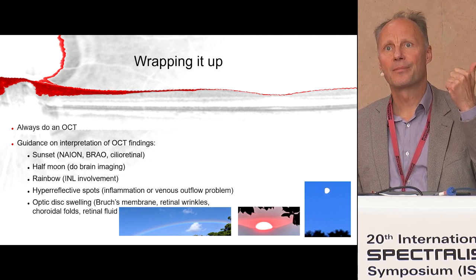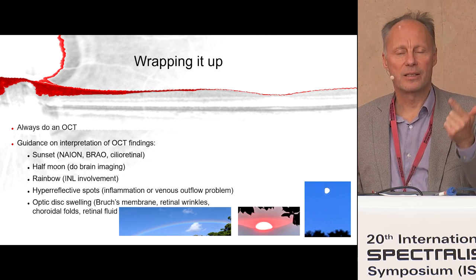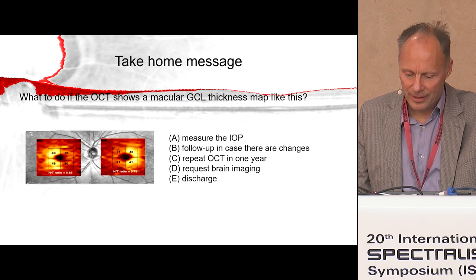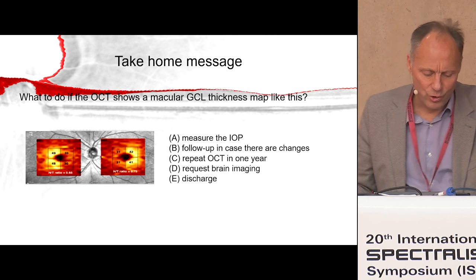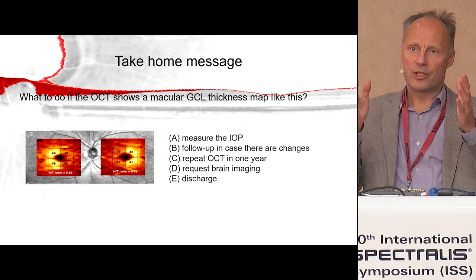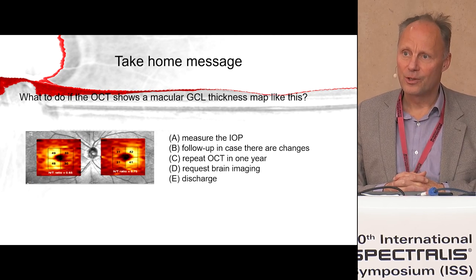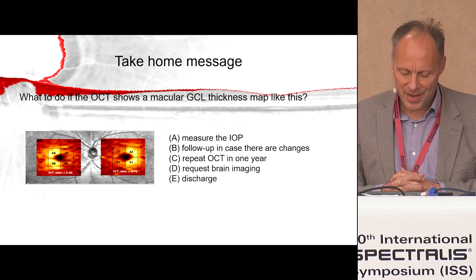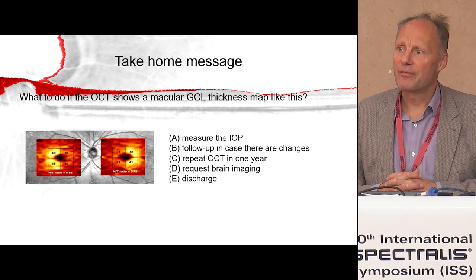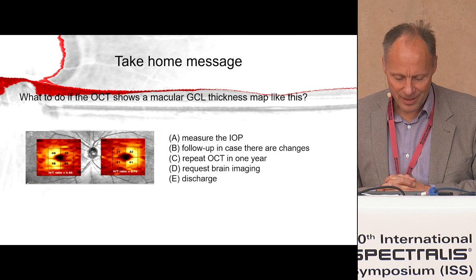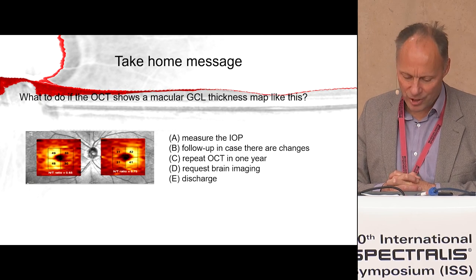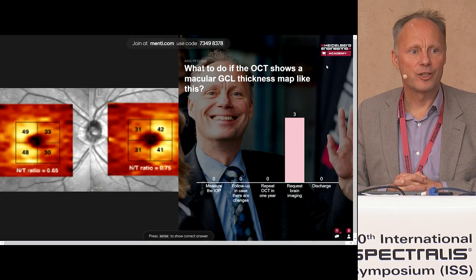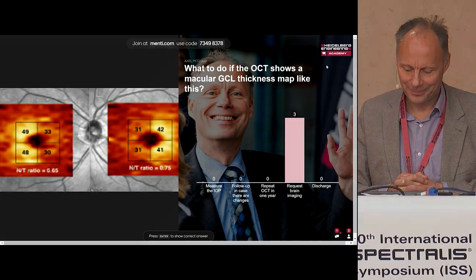To wrap it all up, I gave you three mnemonics to remember: the half-moon sign - you must image; the sunset sign; and the rainbow sign. The question to the audience: what do you do if an OCT shows you this image? A: measure the intraocular pressure; B: follow up for another seven years; C: repeat the OCT in a year's time; D: request brain imaging; or E: discharge the patient. Thank you very much.